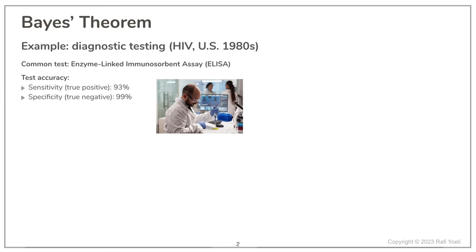The accuracy of the test is defined by its sensitivity, true positive, which is 93%, and specificity, true negative, which is 99%. The prevalence of the disease in the population is estimated at 1.48 people per 1,000.